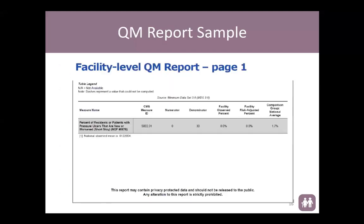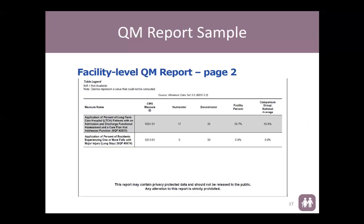This is a screenshot of the facility-level quality measure report for the quality reporting program. You can see it shows the numerator, denominator, facility observed percentage, facility risk adjusted percentage, and comparison group national average. Remember, this data will be different than on your MDS 3.0 CASPER quality measure reports because it is only Medicare fee-for-service Part A beneficiaries. Page 2 looks at patients with an admission and discharge functional assessment and a care plan (Section GG), and long stay residents that experienced a fall with major injury — again, only Medicare Part A fee-for-service beneficiaries.